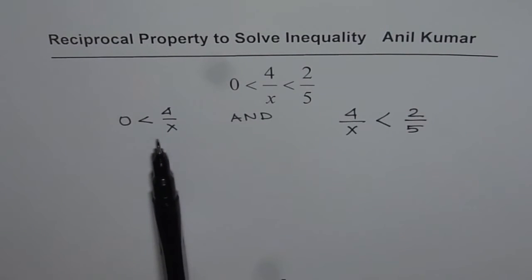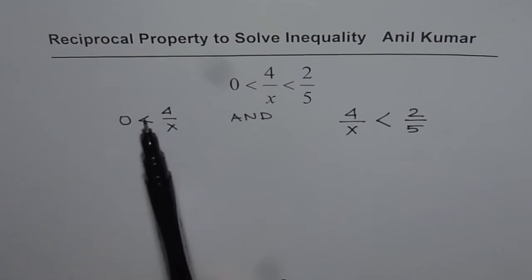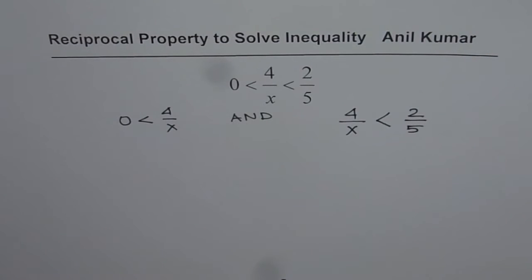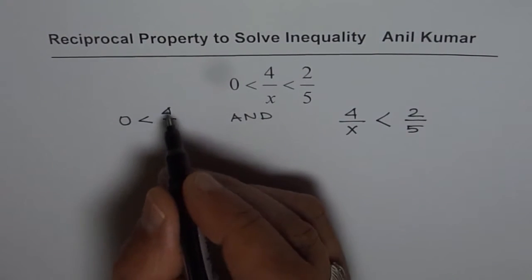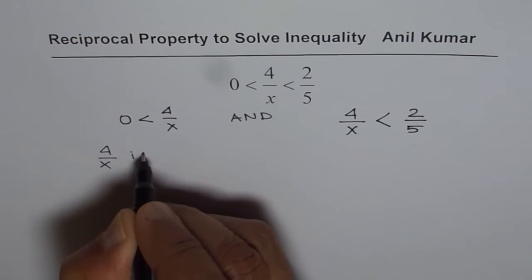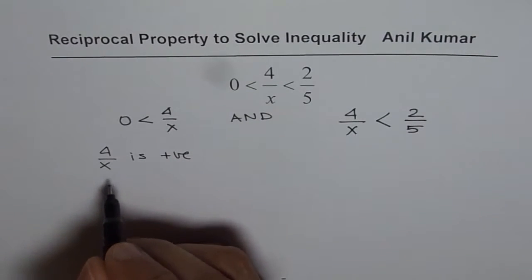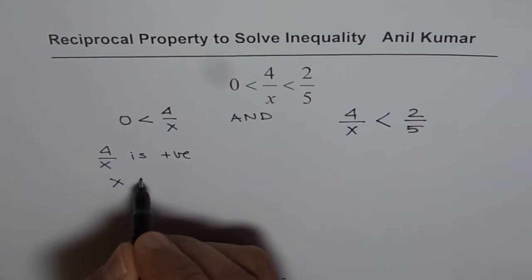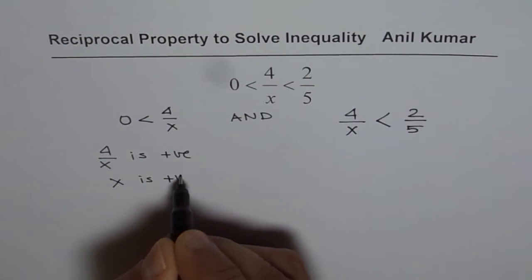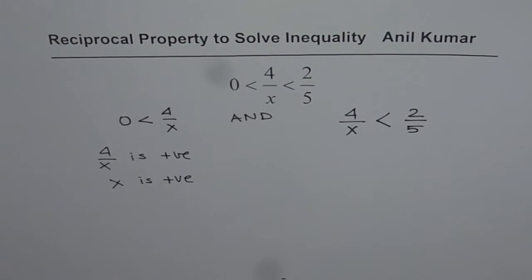Now let's look at the left side: 0 is less than something. That means 4 over x is positive. And that should be possible if x is positive. So any value of x greater than 0 can work for this — that is the reciprocal property applied here.